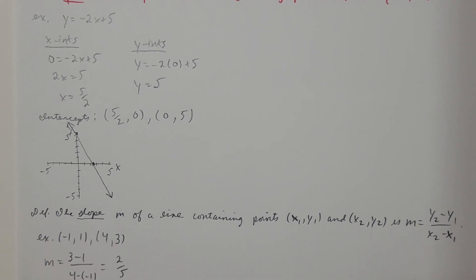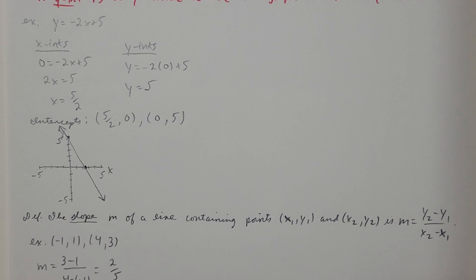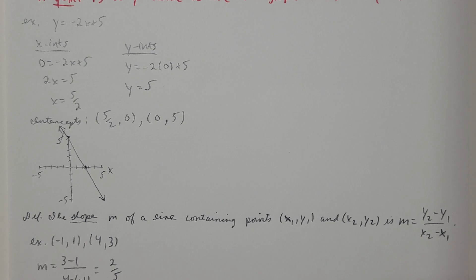Using the intercepts is an okay method for graphing lines, as long as the two points are somewhat distant from each other. Another common method is using the slope and the y-intercept to draw lines.